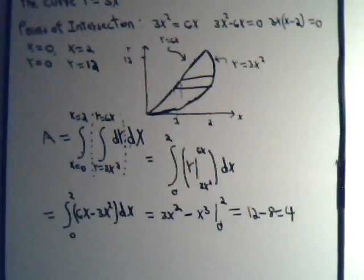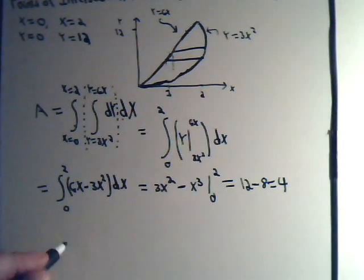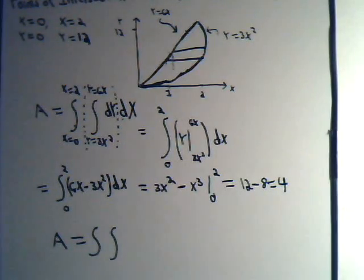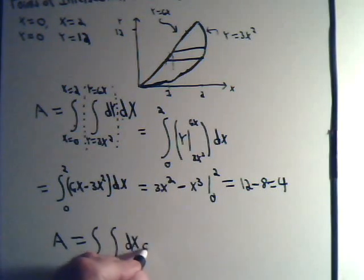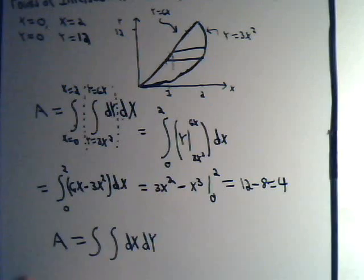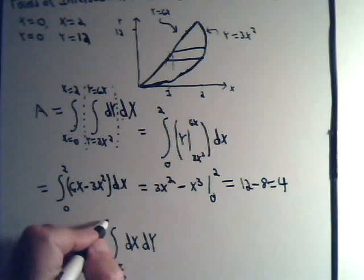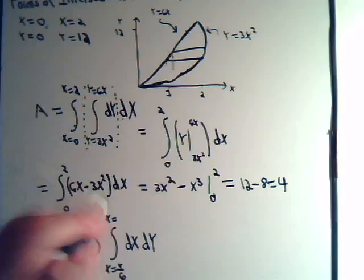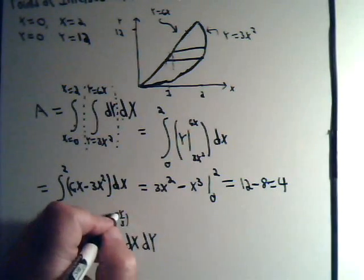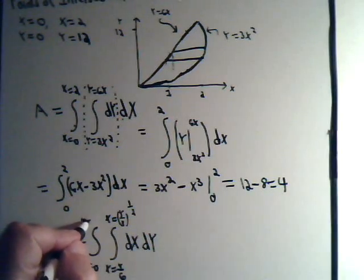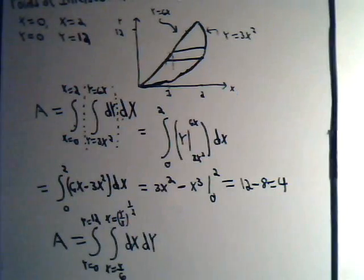starting at y equals 0 and continuing on to y equals 12. So, let's set the double integral up. We have horizontal strips here. So, in general, the integral is going to have this form here of dx, dy. And then x goes from y over 6, so that's our lowermost limit. Up to, or over to, our uppermost limit, which would be the square root of y over 3. And then y goes from 0 to 12.